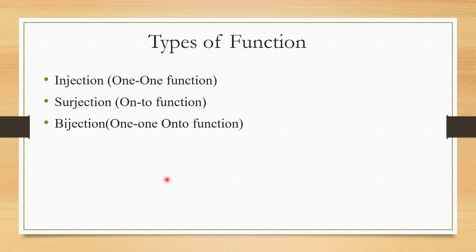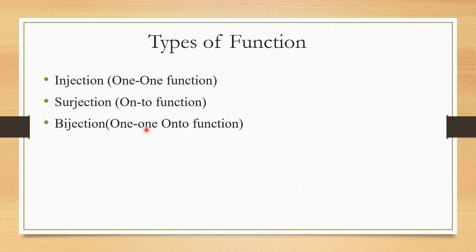Next, we have types of functions. Generally there are three types: one-to-one (Injective), onto (Surjective), and one-to-one onto (Bijective). A one-to-one function is also known as injection, an onto function is also known as surjection, and a one-to-one onto function is also known as bijection.